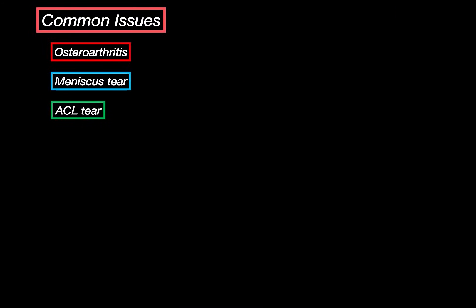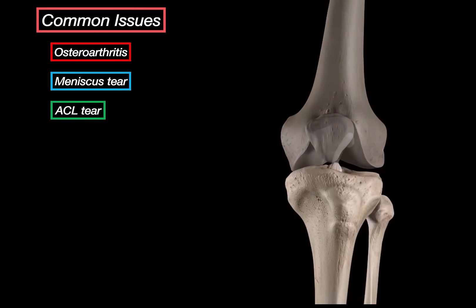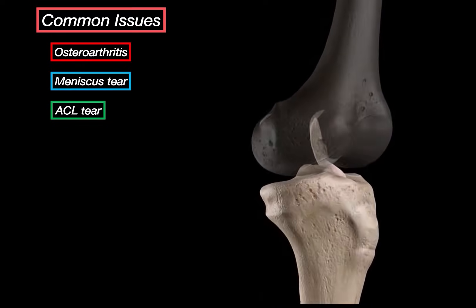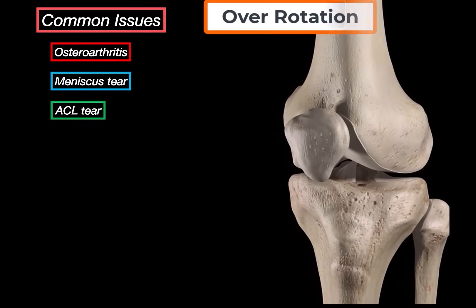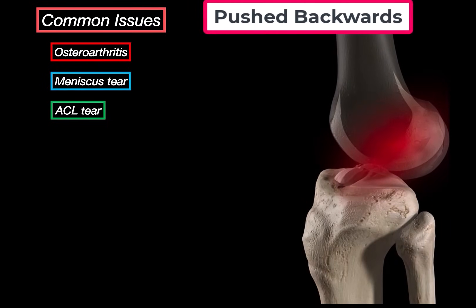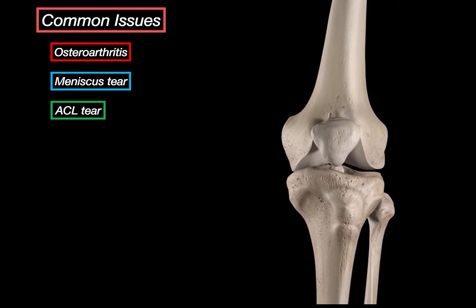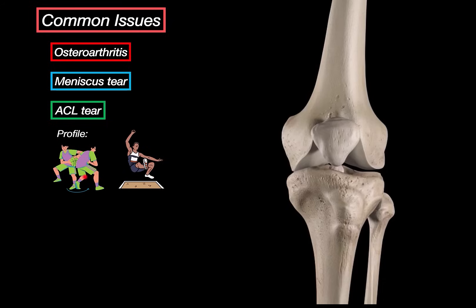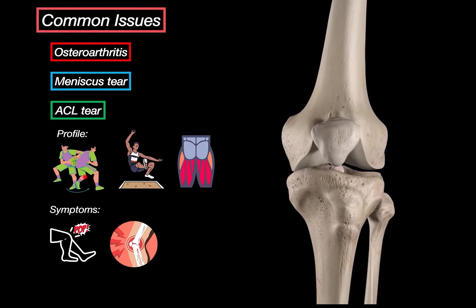Another common issue is an ACL tear — damage to the anterior cruciate ligament, one of the most important stabilizing structures of the knee. When it tears, the knee becomes very unstable. The most common mechanism is when the upper leg overly rotates as the foot is fixed on the ground, or when the upper leg is pushed backwards or sideways while the lower leg is fixed. A torn ACL does not heal well on its own and usually requires surgery. These injuries often happen when someone suddenly stops and pivots, like in basketball or soccer, or lands wrong after a jump. Female athletes have a higher risk, partially due to differences in anatomy and hormones. Weak hamstrings relative to the quadriceps also increases the risk. When it tears, people often describe hearing a loud pop, followed by immediate swelling, a sense of instability, and severely reduced range of motion.